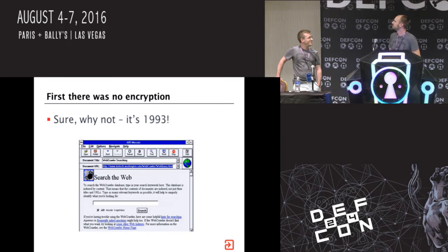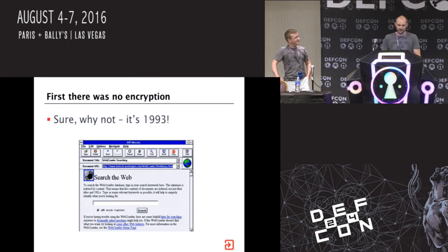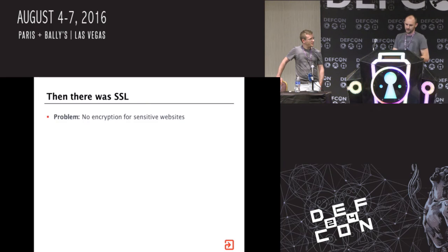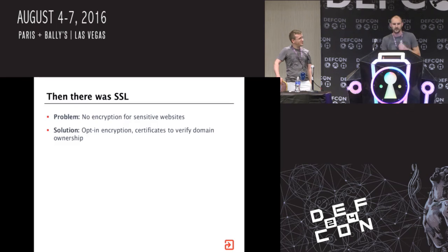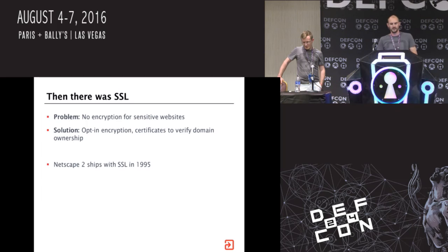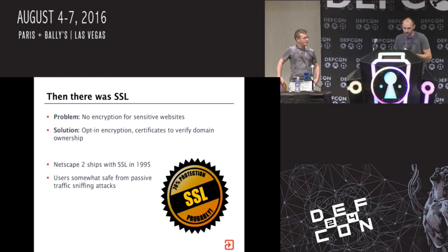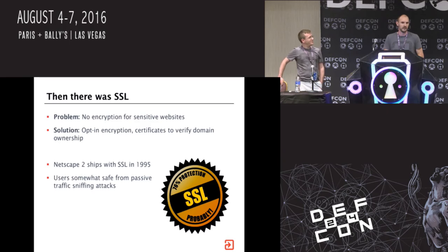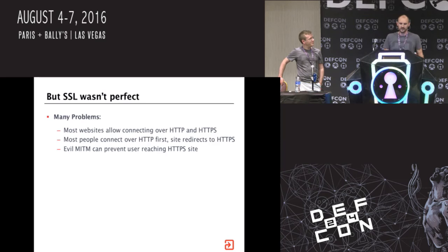Back in the day, 1993, there was no encryption. We're on our Mosaic browser, browsing away, and everyone can see everything that's going on. Then somebody thought, what if I want to do something sensitive over this? So we added opt-in encryption - we're talking SSL here. Netscape 2 shipped with SSL in 1995, a good 20 years ago. Users were somewhat safe from passive sniffing attacks, though we know nowadays that SSL back then was awful and terribly broken. But at the time, it was what we needed it to be.